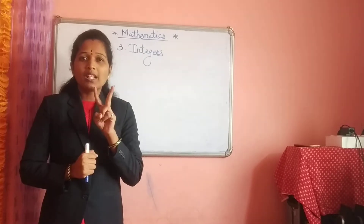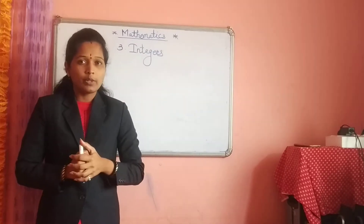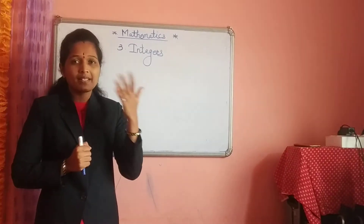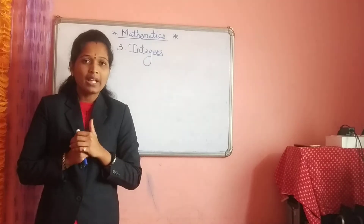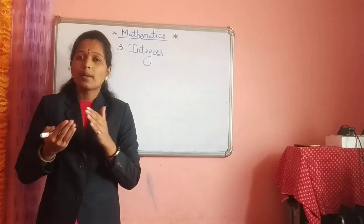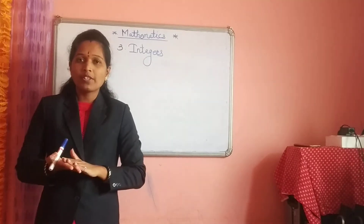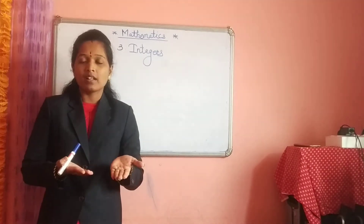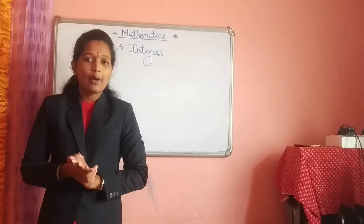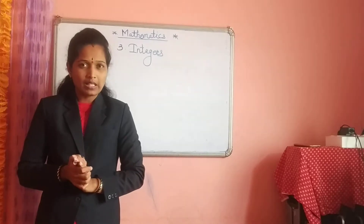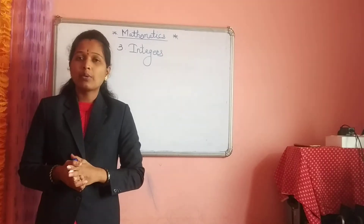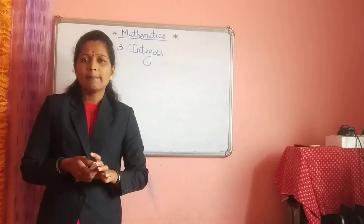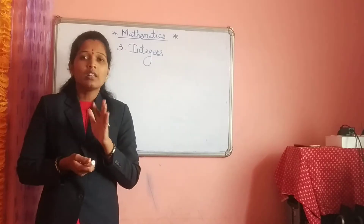Suppose both the numbers are positive — it means plus 5 plus plus 9 is given — so we have to do the addition. Suppose one number is positive and another number is negative. That time we have to do the subtraction, and we have to give the answer the bigger number's sign.